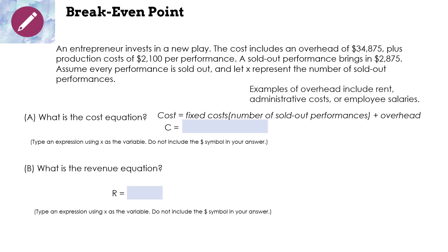Examples of overhead include rent, administrative costs, or employee salaries. $2,100 is what we have to pay per performance — that's the fixed cost. X is the number of sold-out performances; we don't know that. Plus the overhead: they tell us the overhead is $34,875. So our cost equation is: C = 2100x + 34,875.